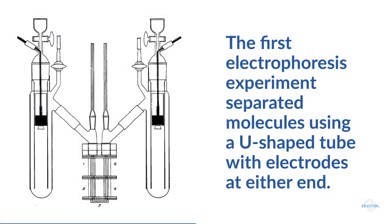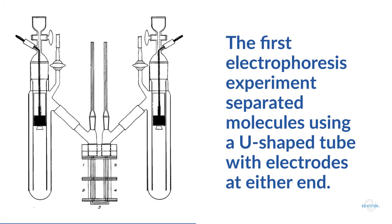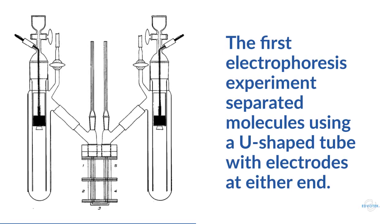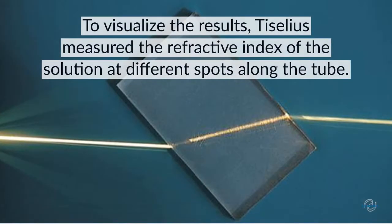The device that Tiselius built to separate the proteins was a U-shaped tube with electrodes at either end. He filled the tube with the sample and buffer and then applied charge to the ends of the apparatus to create an electric field. Based on the charge of the molecules, they would move either towards the anode or the cathode at different speeds. In order to visualize the results, Tiselius measured the speed that light passed through the solution at different spots along the tube.